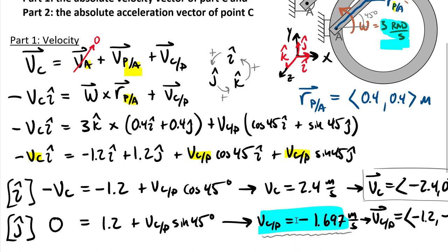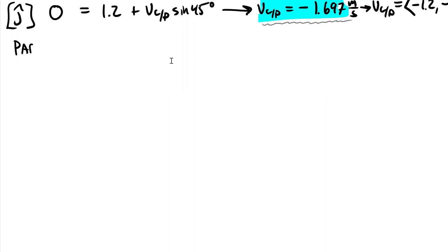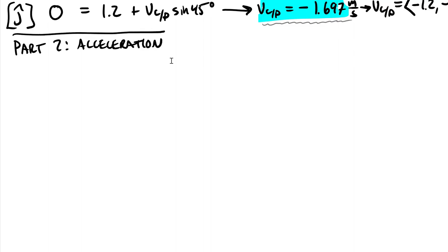In many cases you won't have the omega of all bodies given, and you also need the slipping velocity because it becomes an input into the cross product for the Coriolis acceleration. We're going to pick the exact same order of subscripts for acceleration as we had for velocity: acceleration of C equals acceleration of A plus acceleration of P relative to A plus acceleration of C relative to P.